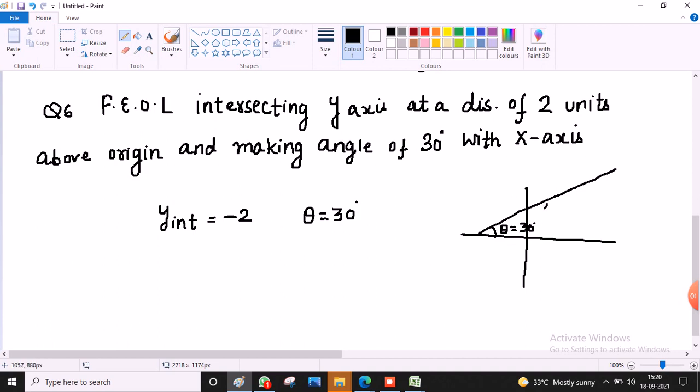And the distance the y-axis is cut, that is 2 units. This means y-intercept plus 2 units, theta. Then we can find slope.